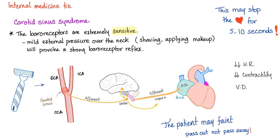Carotid sinus syndrome: these patients have baroreceptors that are so sensitive. Mild external pressure over the neck, such as shaving or applying makeup, will provoke a strong baroreceptor reflex. They sense this mild pressure as an extreme increase in blood pressure and send the vagus nerve efferent, leading to decreased heart rate, decreased contractility, and vasodilation. It can actually stop the heart for 5 to 10 seconds and the patient may faint — it's very dangerous.